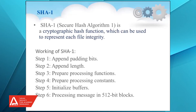The next algorithm is SHA-1, that is Secure Hash Algorithm 1. It is also a type of cryptographic hash function, basically used to represent each file's integrity. The first step is append of padding bits — padding is done with a 1 followed by as many zeros as needed so that the total length equals 512-bits. The next step is append length — the original message comes first, then the padding bits.